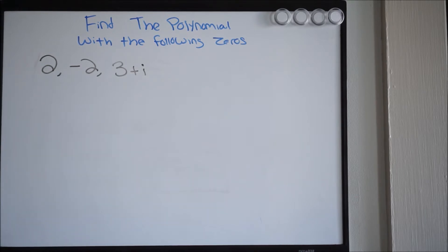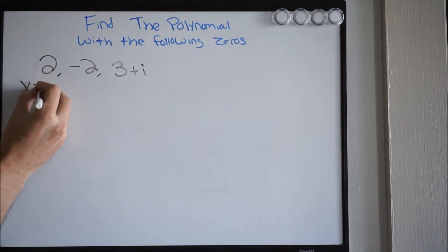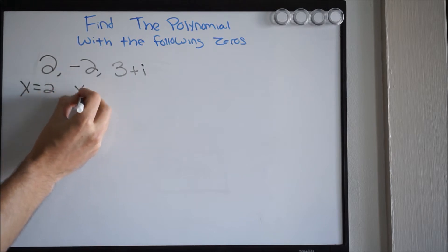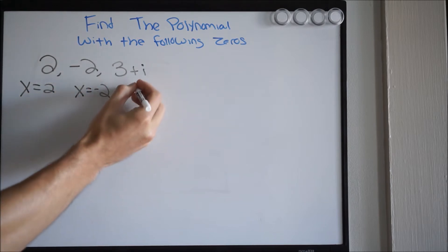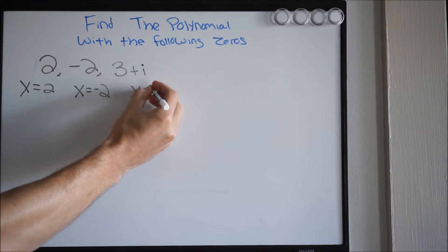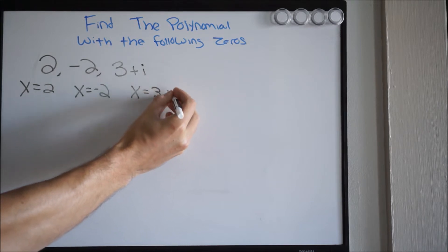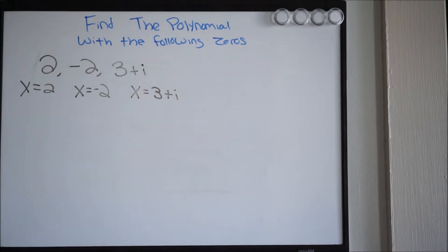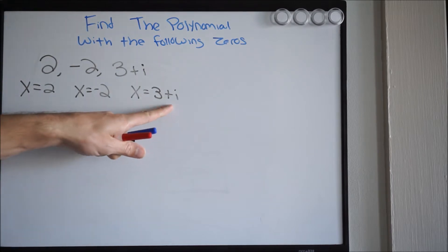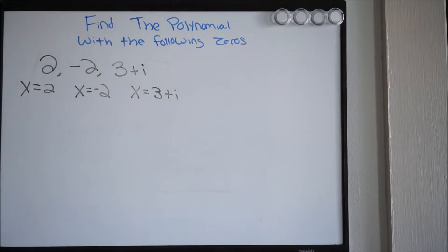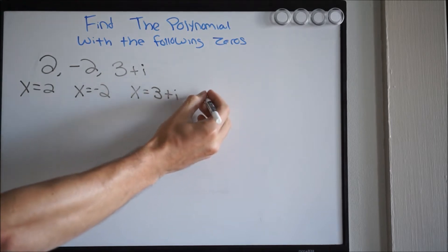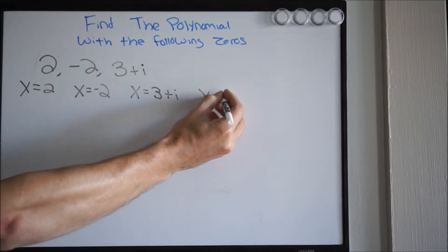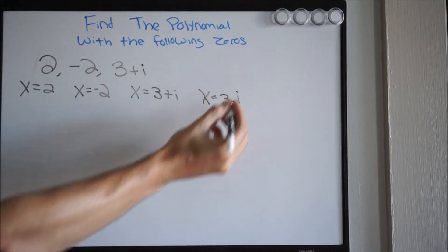We're given the zeros. So what you want to ask yourself is where did these come from? Essentially what this is saying is x equals 2, x equals negative 2, x equals 3 plus i. And be careful here — even though it's not listed, we know that since we're dealing with i, this is going to have a complex conjugate, and that's going to be x equals 3 minus i.